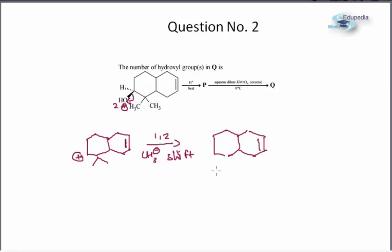So double bond over here, this methanide goes here, then there is minus H plus and we get an alkene like this.